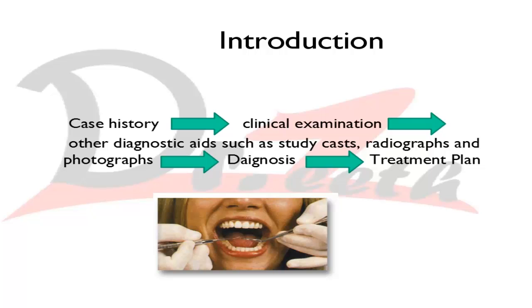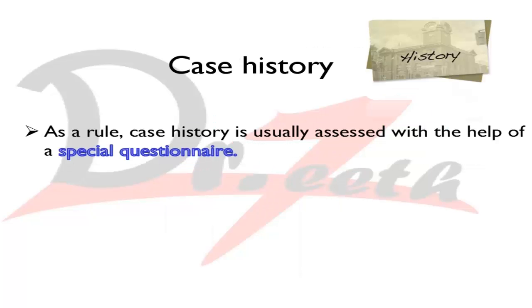When a patient comes to our clinic, first we take the case history, do the clinical examination, ask for diagnostic aids such as study casts, radiographs, and photographs, then reach a diagnosis and formulate a treatment plan. So case history is the first step towards the treatment plan.